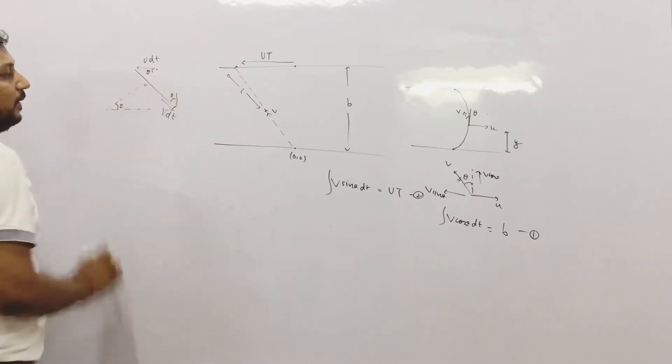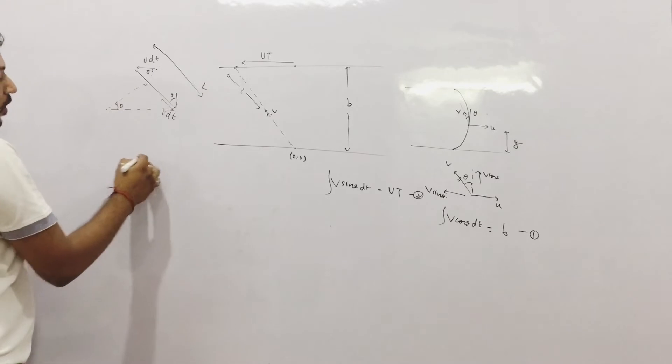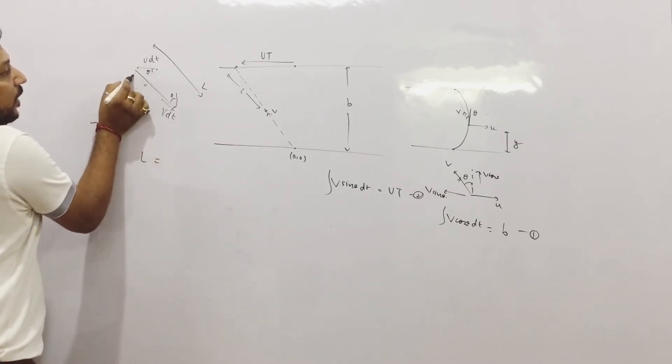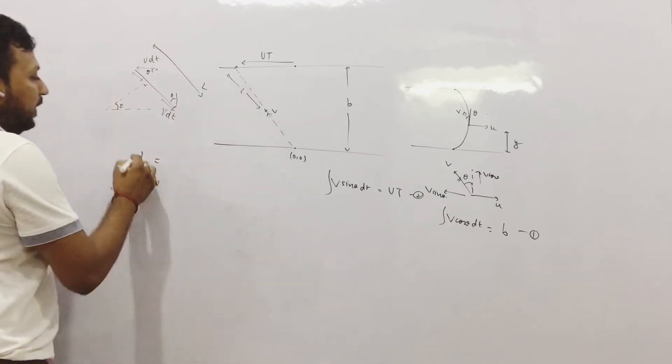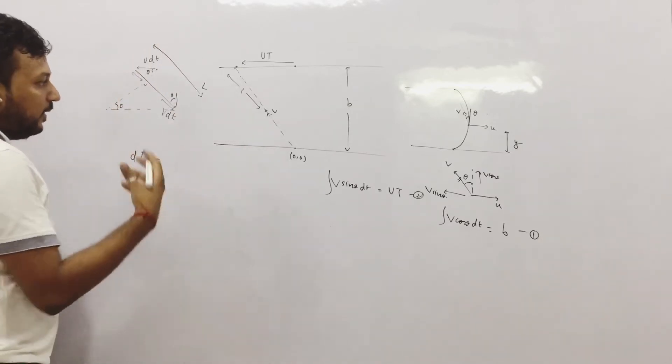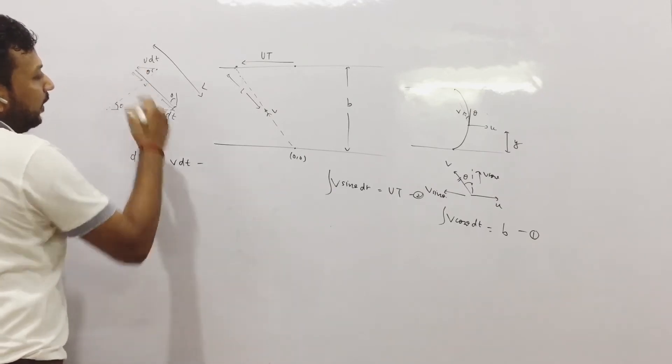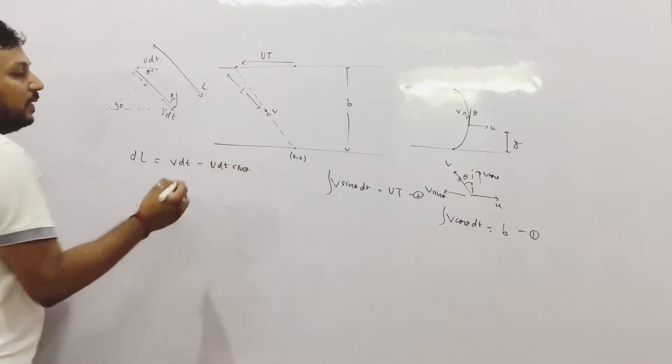Again this is alternating half, this is again theta. So we can see the distance l was covered by this and was increased by the component of u dt this side. That means dl, the small element dl, was covered by v dt but increased by u dt sin theta.